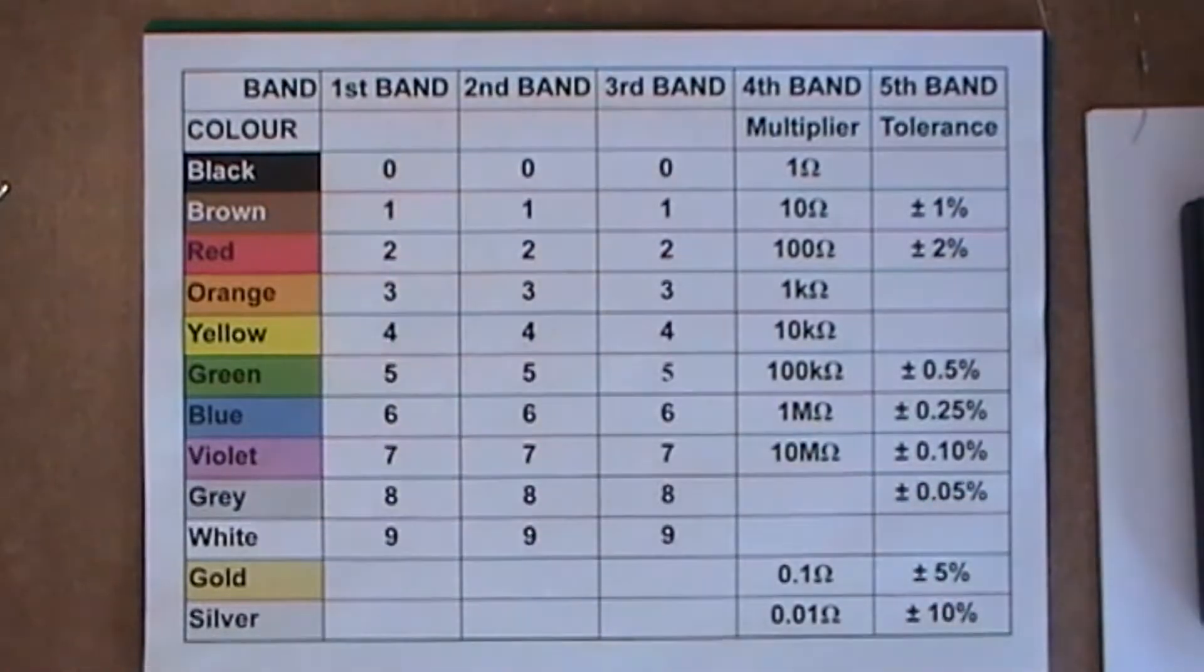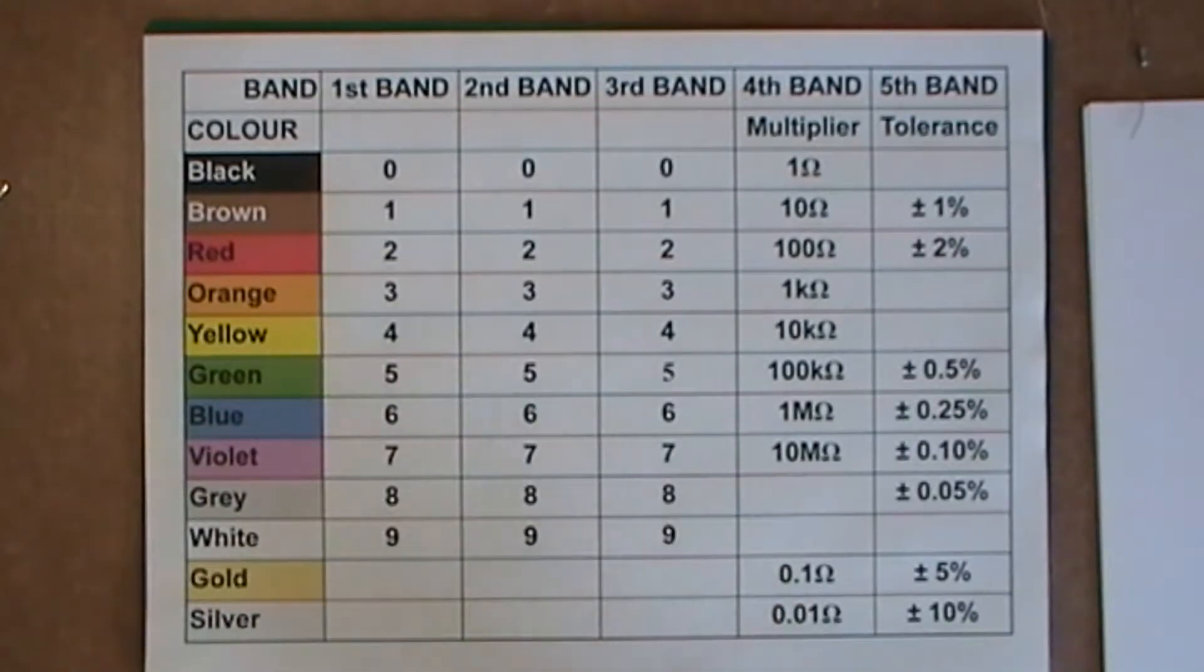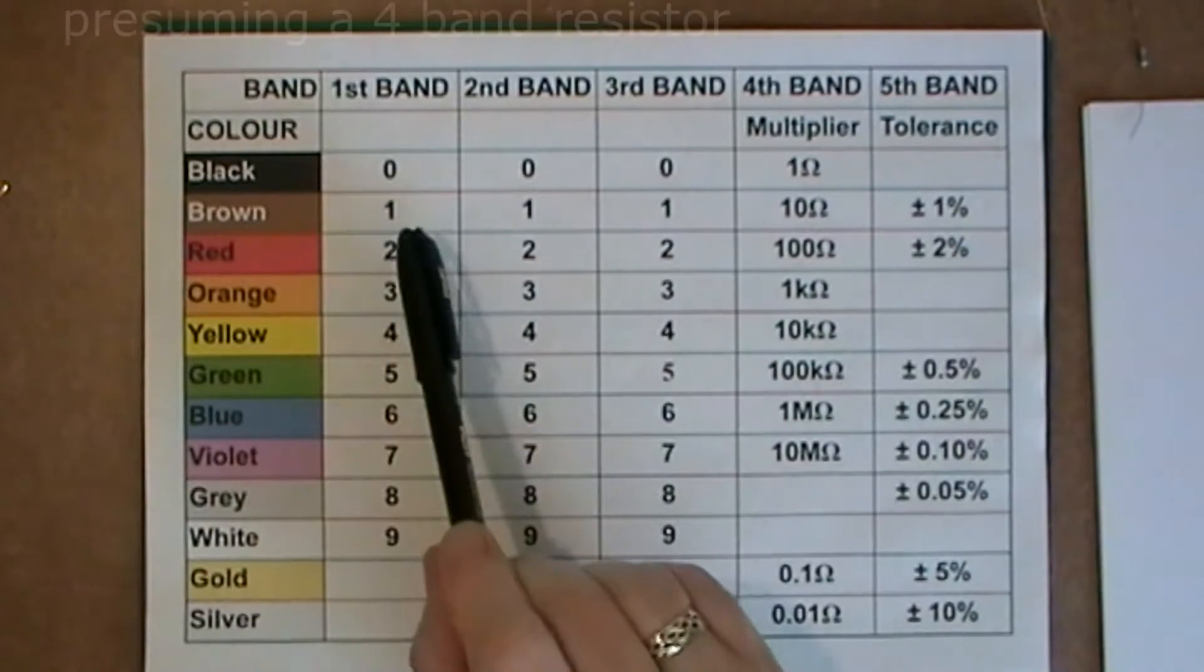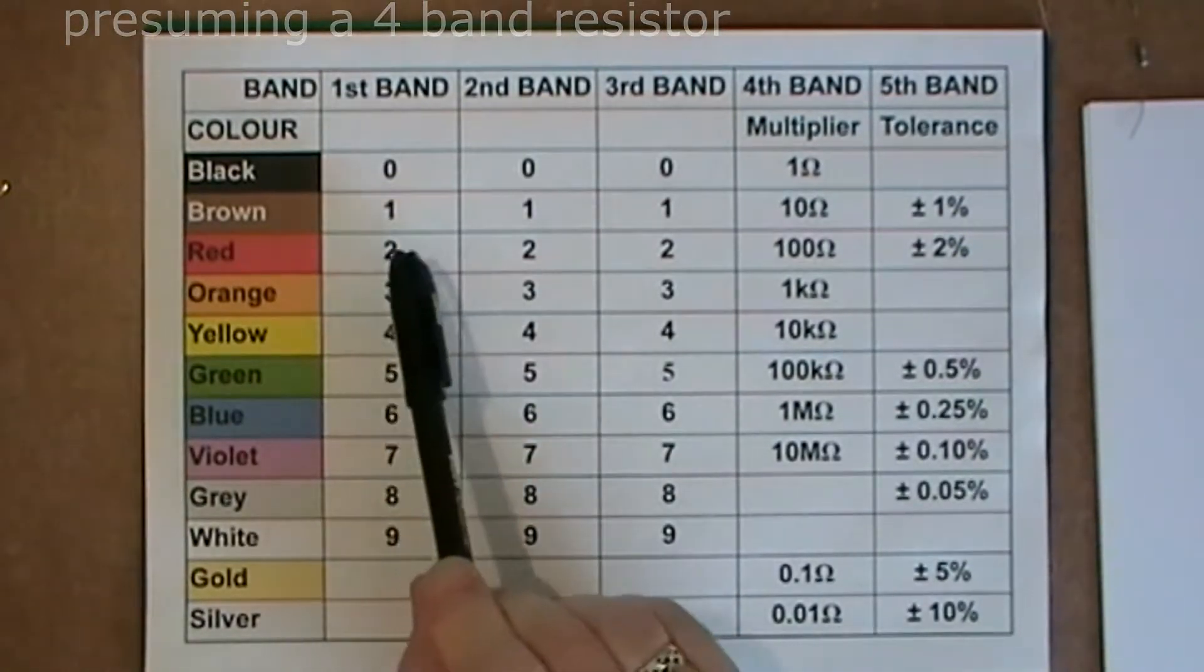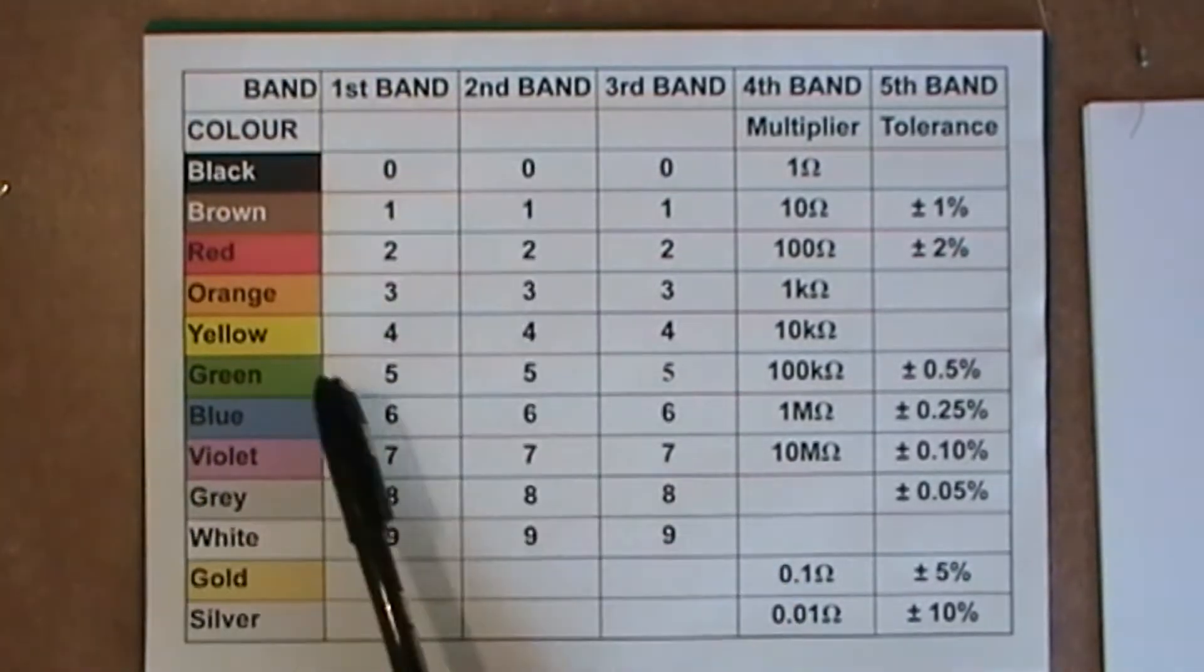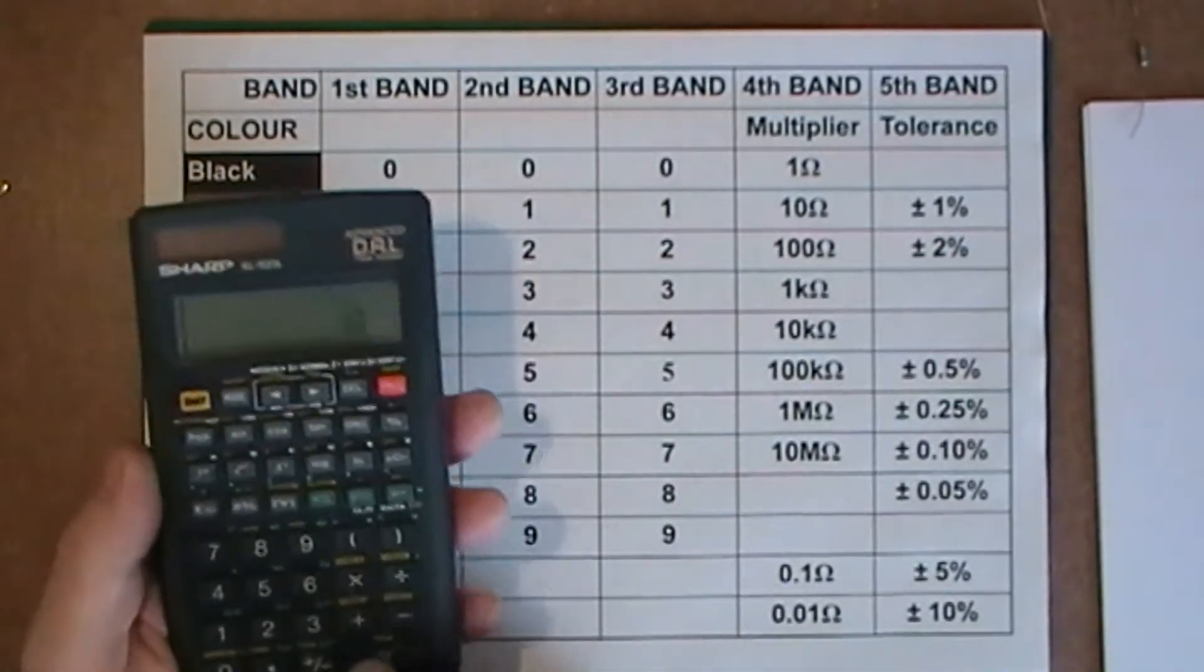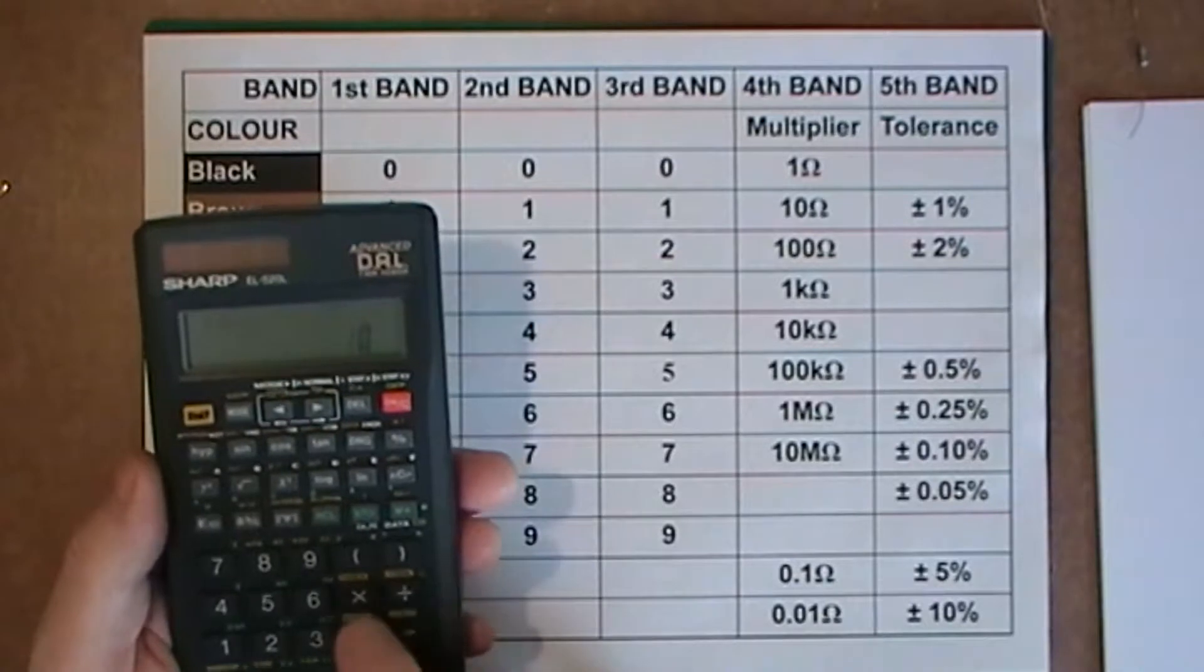That doesn't seem too bad. Seems quite simple to me. But of course, there are some resistors that are much lower values. That's where we've got this gold and silver. Now, if I remember rightly, you would have something like a 1, 0. So we'd have a brown, and then a black, and then the multiplier would be gold.